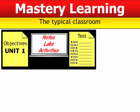Let's first look at the typical classroom. We start with a set of objectives — what we call Unit 1. During the time in class, time is spent with notes, labs, and activities, and then at the end of the unit, the student will take a test.